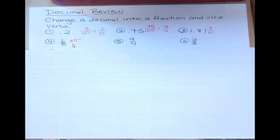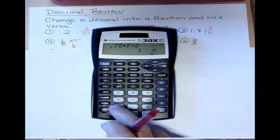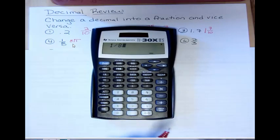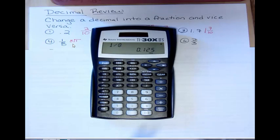Now, I don't want you to spend a lot of time doing long division like that. You can use your calculator for that, and just do 1 divided by 8, and hit enter, and it's going to give you 0.125.